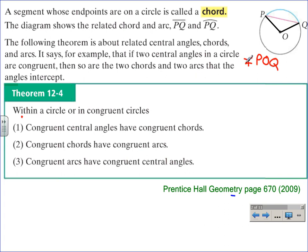We could say here that central angle POQ intercepts chord PQ and it also intercepts arc PQ. Again, if you're working out of the Prentice Hall geometry book, copyright 2009, this theorem could be found on page 670. Theorem 12.4 says within a circle or in congruent circles that congruent central angles have congruent chords. Part two says congruent chords have congruent arcs. And part three says congruent arcs have congruent central angles.